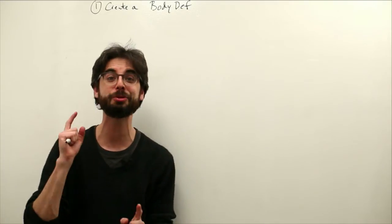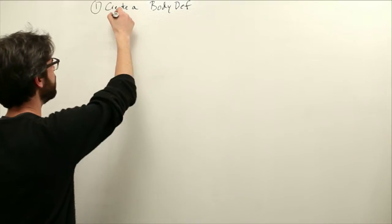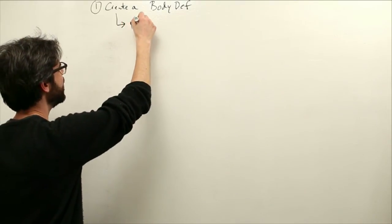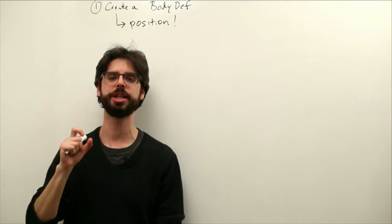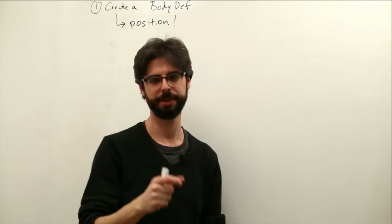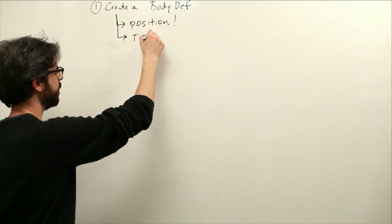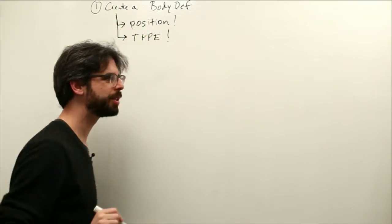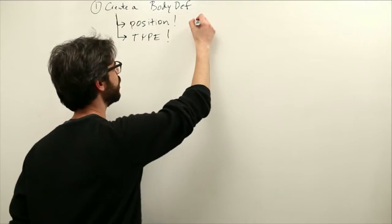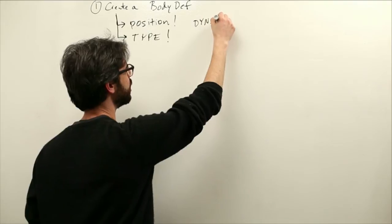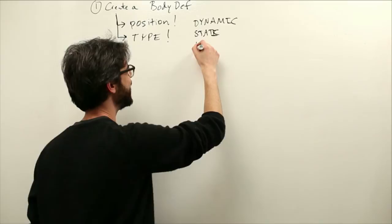Now the body definition is where you set two really key parameters to the body. One is simply, and there's a bunch of things, it's initial position. So where is it going to start in the world? It needs an initial position. The other thing we're going to give it is a type. Type is very important. We're going to see three options. I guess I'll write these down for you. Dynamic, static, and kinematic.